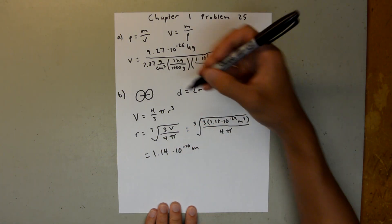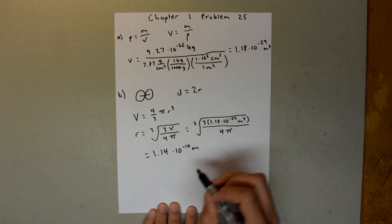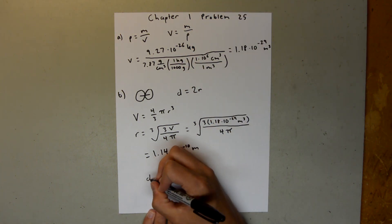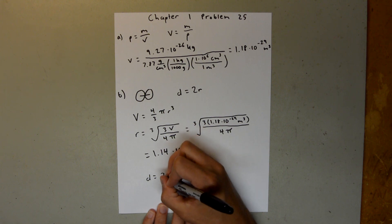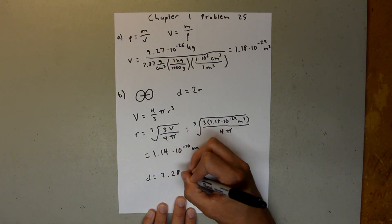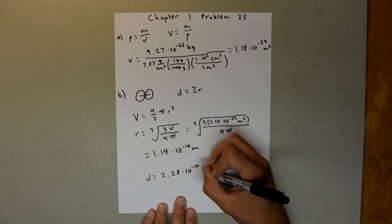And like I said, since we know our distance is equal to 2r, that's going to be 2 times this, so our distance is going to be equal to 2.28 times 10 to the negative 10 meters.